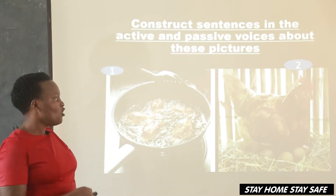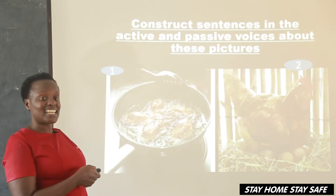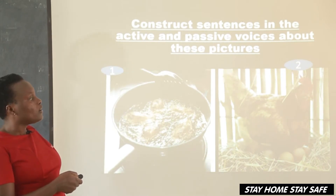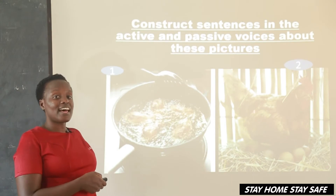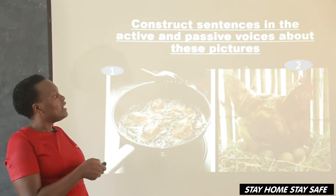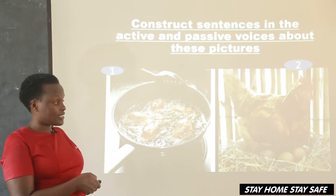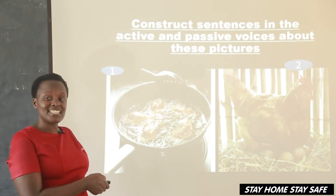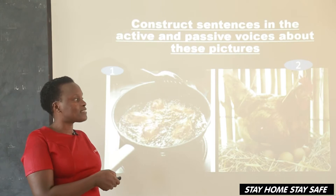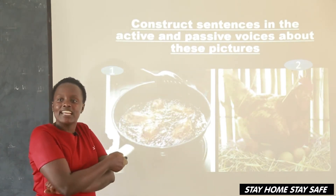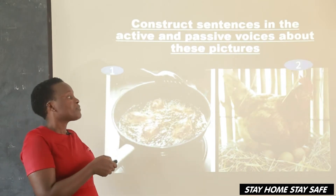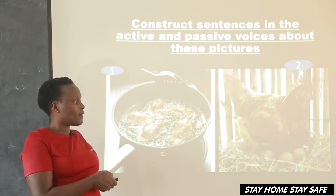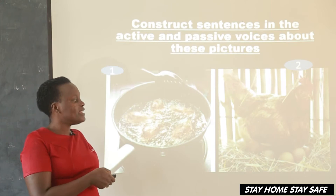Picture two: what has the hen done? The hen has laid eggs. When we say 'The hen has laid eggs,' that is active voice, because we are looking at what the hen — the subject — has done. If we change that to passive, we look at what has been done to the eggs. So we say: 'The eggs have been laid by a hen.'